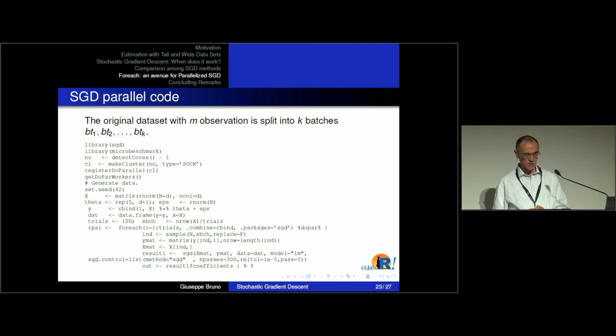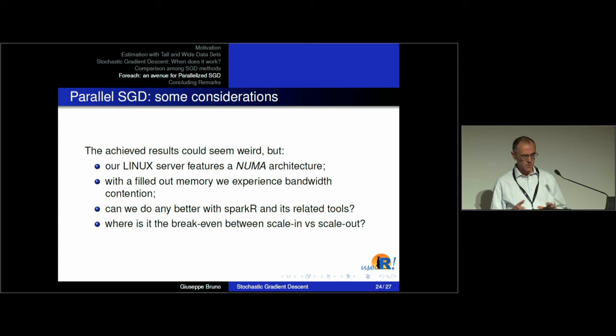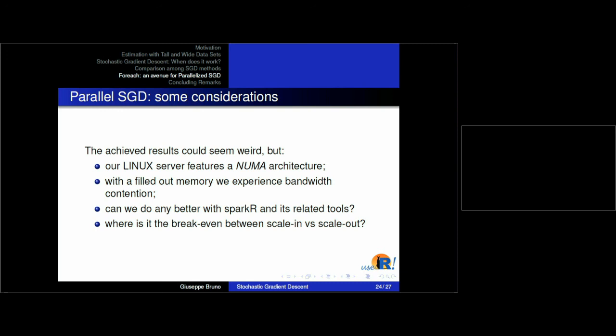My explanation is that our Linux server features a NUMA architecture — non-uniform memory access. When we fill out the whole memory, the server memory was completely used up, and we experience bandwidth contention to access memory from the different cores.